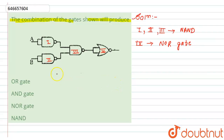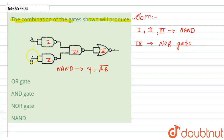Now we will find the Boolean expression for them. For a NAND gate, the Boolean expression is Y = (A·B)̄. For the first and second gates, the inputs are joined together. When the inputs of any gate are joined together, that gate works as a NOT gate. So both of them will work as NOT gates, and for a NOT gate the expression is Y = Ā.